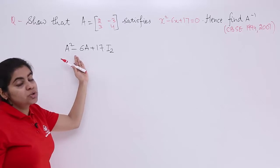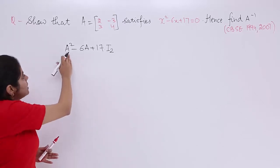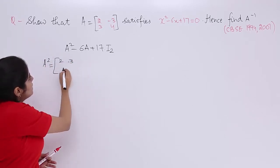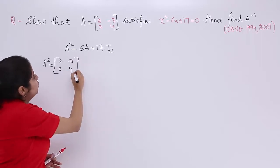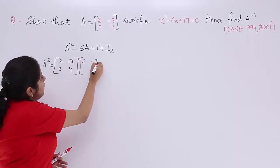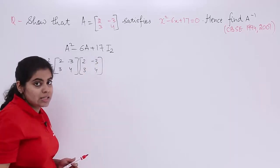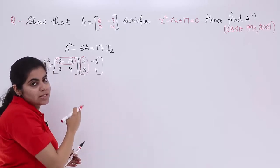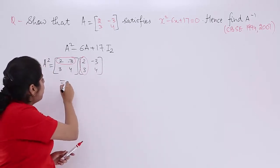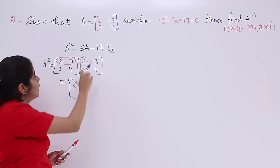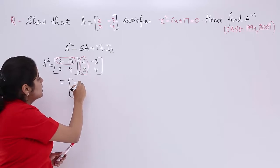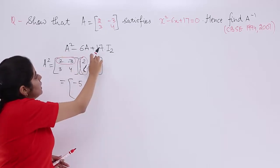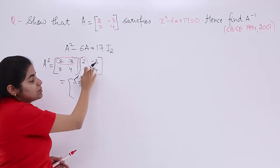A² means multiplying matrix A by itself: [2, -3; 3, 4] × [2, -3; 3, 4]. For the first row, first column: 2×2 + (-3)×3 = 4 - 9 = -5. For the first row, second column: 2×(-3) + (-3)×4 = -6 - 12 = -18.